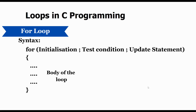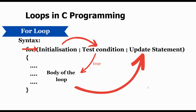In this for loop, the variable used for initialization controls the entire loop. First we initialize a variable, then the test condition is checked. If it is evaluated to true then the body of the loop is executed. Once all the statements are done the variable is updated to get a new value. Then again the test condition is checked, and if it is true then the body of the loop is executed again. These steps are repeated until the test condition is false.